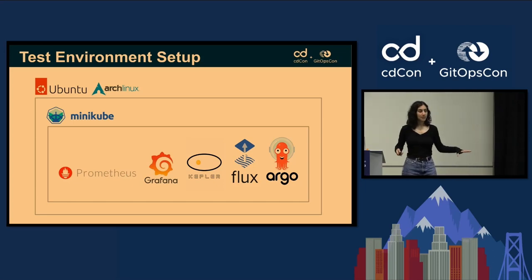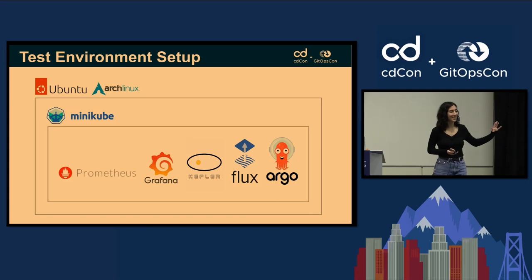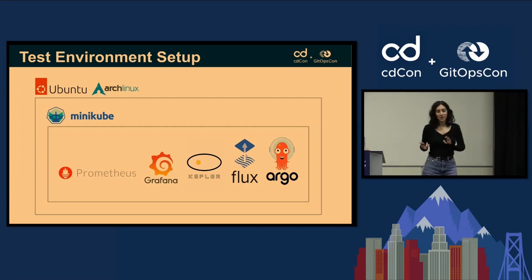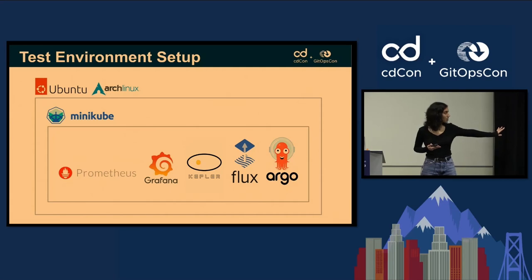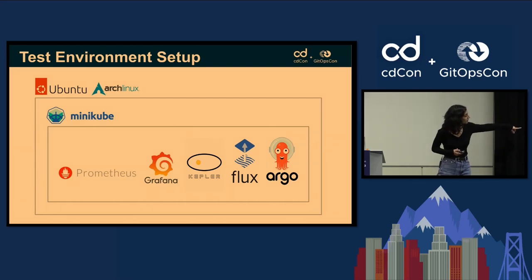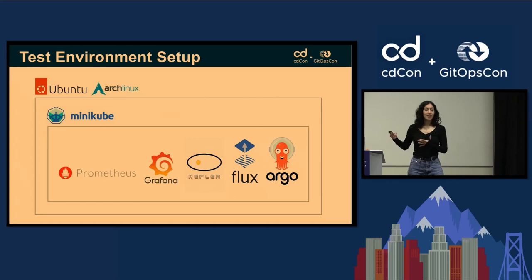The test environment setup for these tests included Ubuntu and Arch Linux — very painful. Trying to do this on a Mac was very difficult, even in a VM. On Linux it's much easier. We used Minikube to create the cluster environment with a CPU count of four — three is also possible, but it caused compute issues and crashed machines multiple times. We then used Prometheus, Grafana, and then the secret sauce, Kepler, to measure Flux and Argo operations.